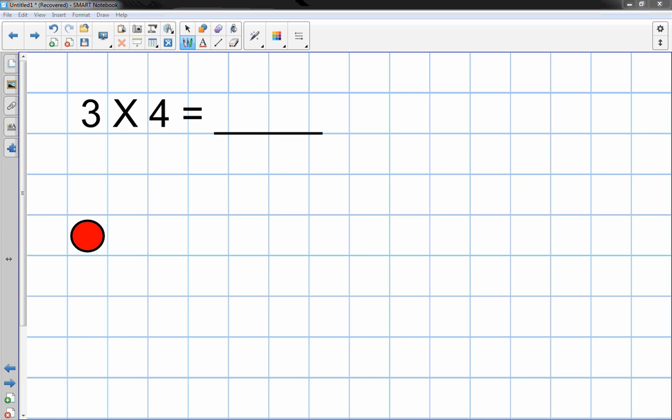I like to have the students use graph paper, so we're going to do this problem 3 times 4. I'm going to use this red circle, and I'm going to do my work over in this area here.